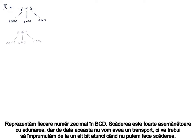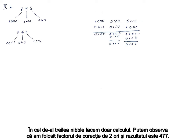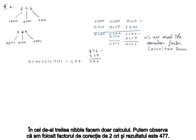We represent each decimal number into BCD. The subtraction is very similar to the addition, but this time we won't have a carry. Instead, we'll have to borrow from another bit when we can't make the subtraction. In the first nibble, we borrowed a bit from another nibble, so we will have to subtract the correction factor. In the second one, we surpassed 9, so we will have to subtract 0110 again. In the third nibble, we just made the computation. We used the correction factor 2 times and the result is 477.